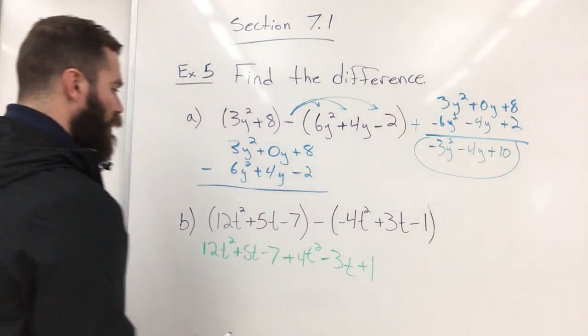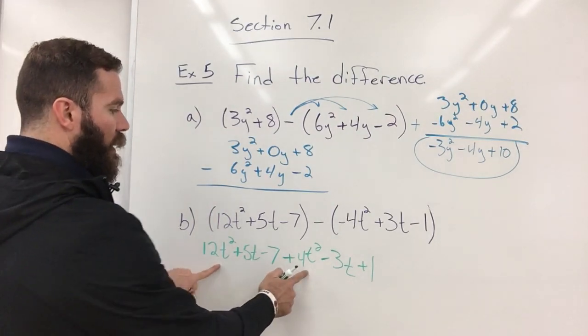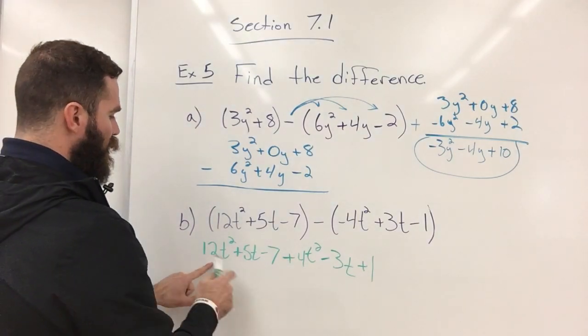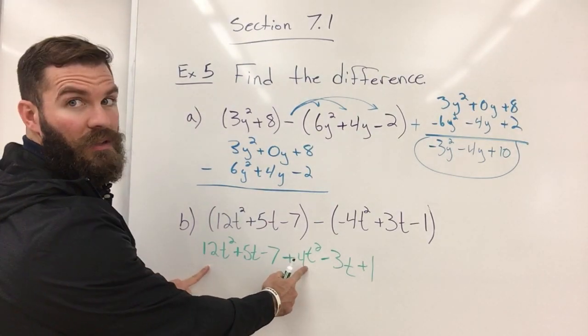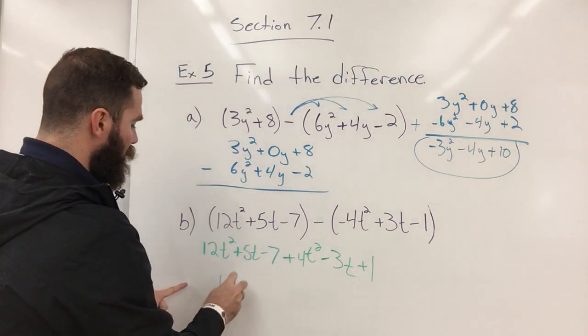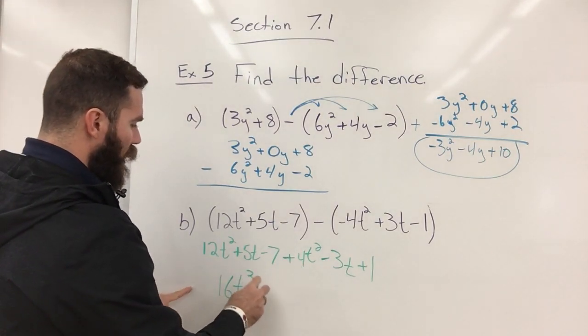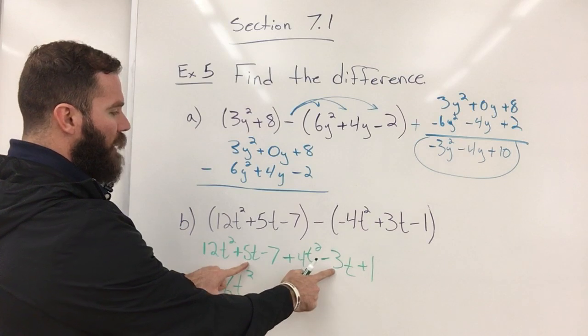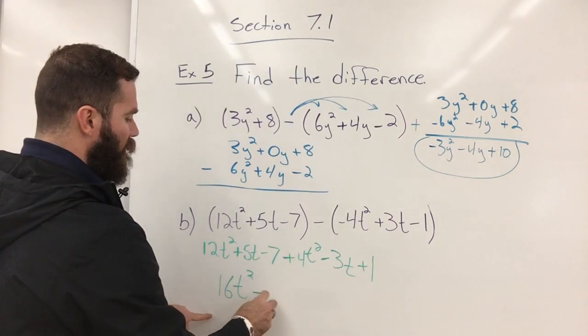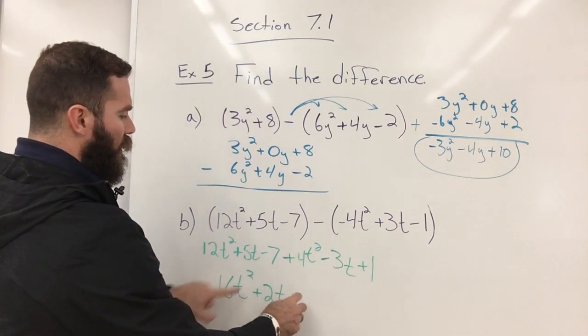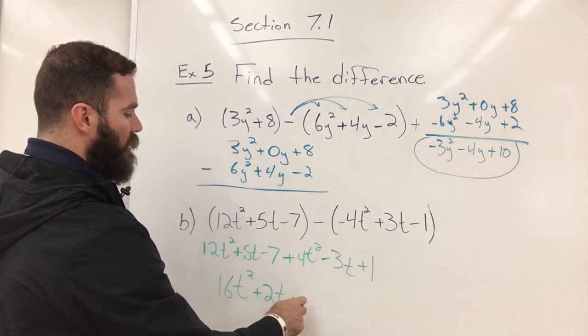Now let's combine like terms. Our like terms are the t squared. So we have a 12 and a 4t squared, which gives us 16t squared. We have a 5t and a minus 3t, so that's going to be a positive 2t. We have a negative 7 and a 1. That's a negative 6.